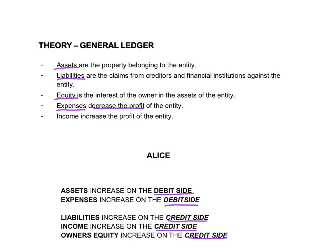We can use the word ALICE to remember which accounts increase on the debit side and which ones will increase on the credit side. If I take the first letter and the last letter of ALICE, that is Assets and Expenses — they will increase on the debit side. If we take the letters inside the word, that's Liability, Income, Capital — they will increase on the credit side.